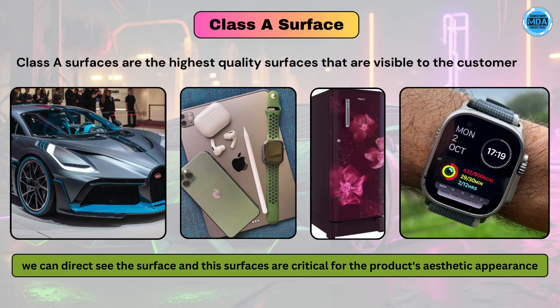Class A surfaces are the highest quality surfaces that are directly visible to the customer — the outermost surfaces of the product. These surfaces are critical for the product's aesthetic appearance. Class A surfaces give the first impression to the customer and are very important from an aesthetic point of view.